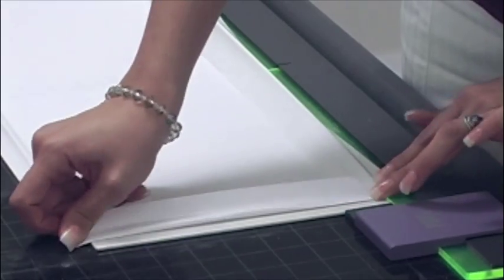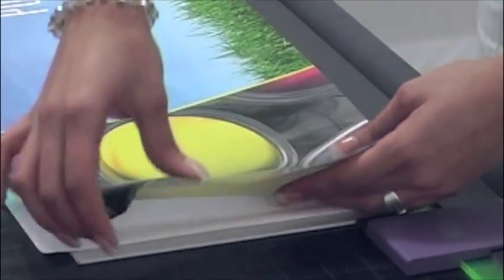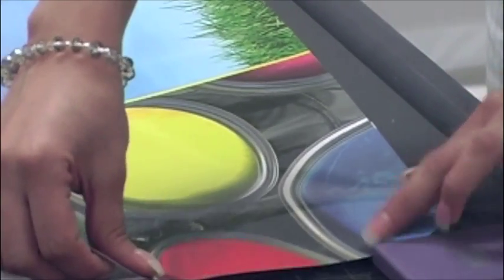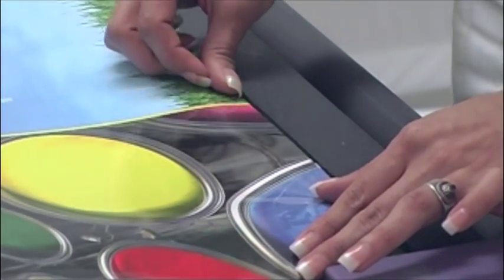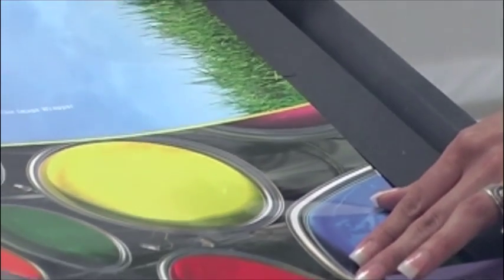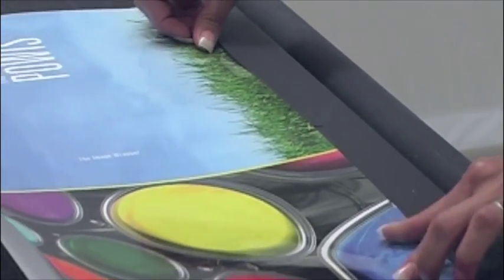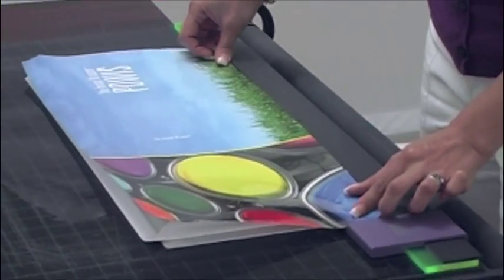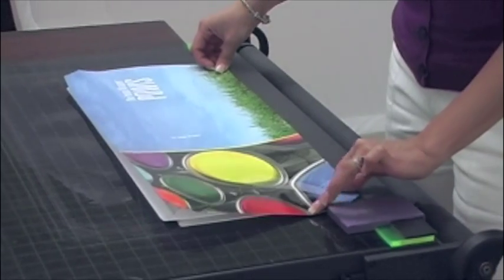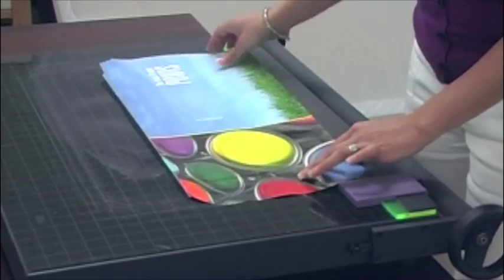Peel back the left edge of the release paper to expose approximately an inch of the adhesive. Place the printed sheet on top of the cover aligning the bottom edge to the black eye and the left edge to the purple slider. Press the printed wrap against the exposed adhesive to secure it in place.